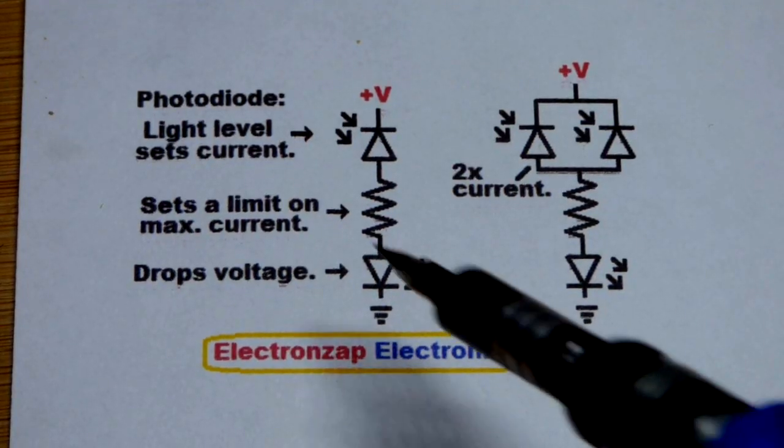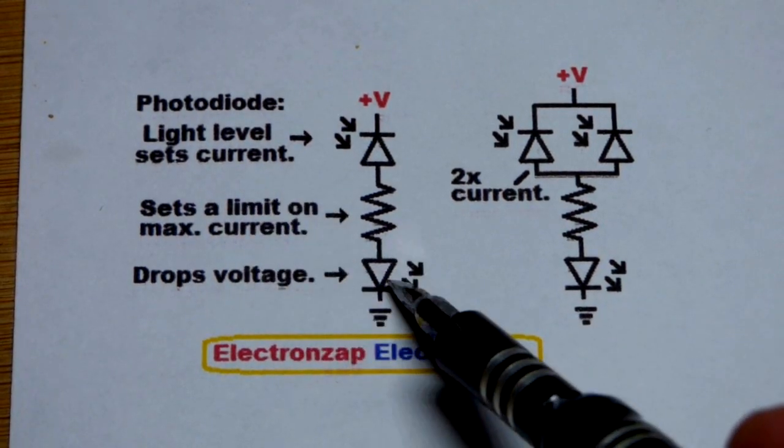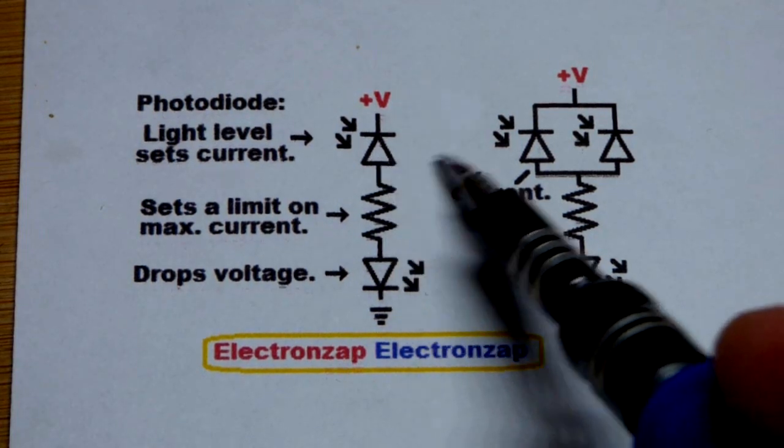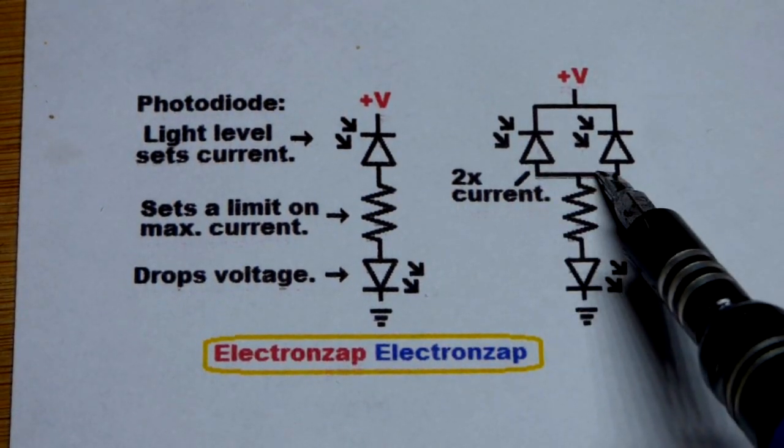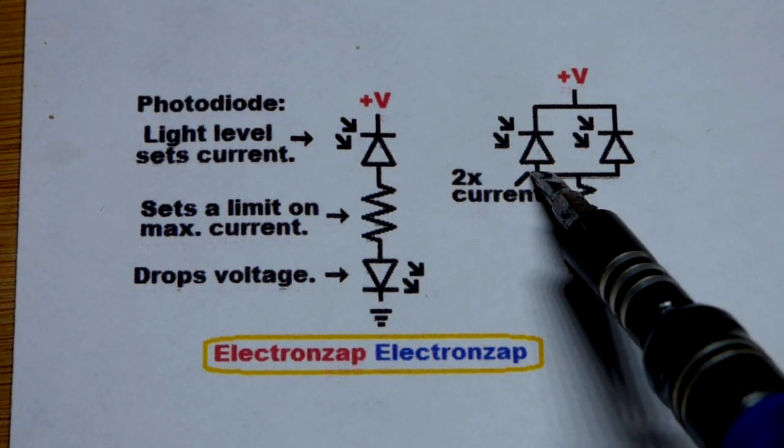And I drew a schematic diagram. So as we saw how much current flows through, ultimately how bright the LED gets in this case depends on the photodiodes. We can double it though by having two photodiodes of course. They have to be pointing at the light exactly the same.